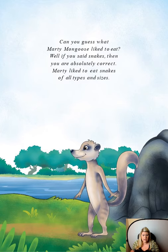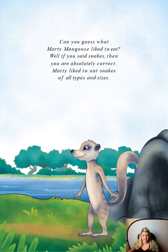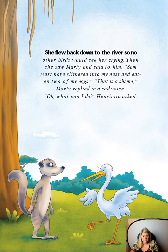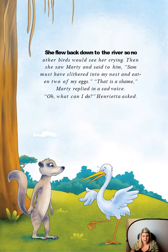Can you guess what Marty Mongoose likes to eat? If you said snakes, then you are absolutely correct — Marty likes to eat snakes of all types and sizes. One day, Henrietta was out looking for food. When she returned to her nest, she found that two of her eggs were gone. Something had gotten into her nest and eaten two of her precious eggs. Look how sad Henrietta looks — she only has one egg left. She flew back down to the river so no other birds would see her crying. Then she saw Marty and said, 'Sam must have slithered into my nest and eaten two of my eggs.' 'That is a shame,' Marty replied in a sad voice. 'What can I do?' Henrietta asked.